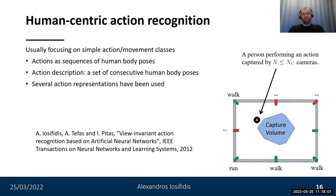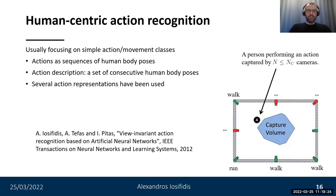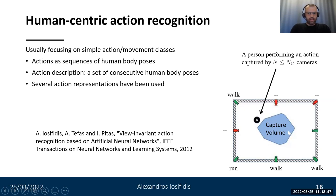One strict assumption is that the human body poses should be visible from all viewing angles. If a person is performing the action outside the camera capture volume, his or her body will not be seen from all cameras. To address this, one can perform action recognition on each camera independently and then combine the results from all cameras which observe the action. For example, if person A performs the action outside the capture volume, some cameras cannot observe the action, while others can provide a classification result such as 'walk'. Green cameras provide a result, while red cameras cannot.